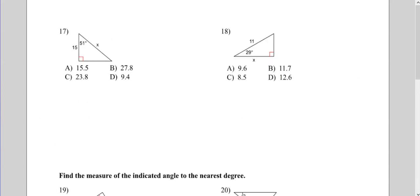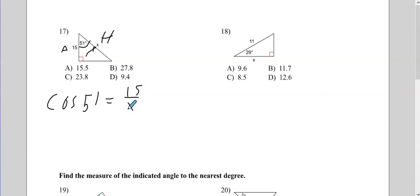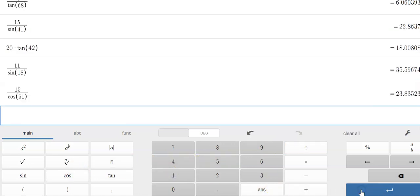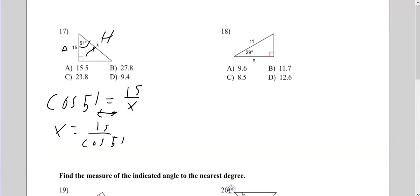Number 17. We have our angle and a hypotenuse marked. The 15 is close to the 51-degree angle, so that's adjacent. Right off the bat, that's cosine of 51 degrees. Cosine is adjacent over hypotenuse, so we have the switcheroo: 15 over cosine of 51. That gives 23.83 — the 3 is less than 4, so we round down to 23.8, which is answer C.